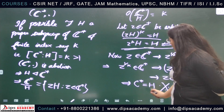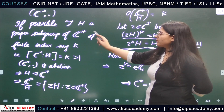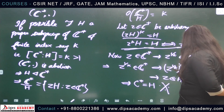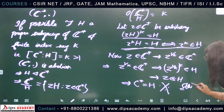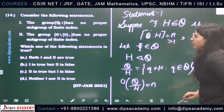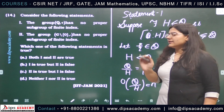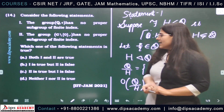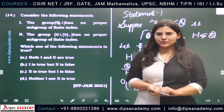We are led to a contradiction, which implies our assumption that there exists a proper subgroup H of C* of finite index is wrong. Therefore statement two is correct. Both statements are true and option A is the correct answer: neither Q+ nor C*·(dot) has any proper subgroup of finite index. I hope you have understood the question. For any query, you can comment in the comment section. Thank you so much for watching the video.